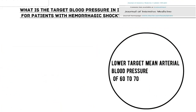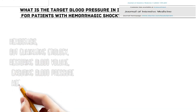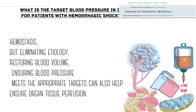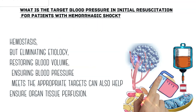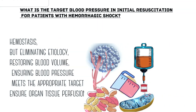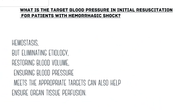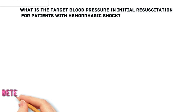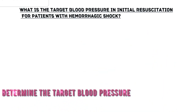The treatment of hemorrhagic shock mainly involves timely hemostasis, but eliminating etiology, restoring blood volume, and ensuring blood pressure meets appropriate targets can also help ensure organ tissue perfusion. Thus, we need to determine the target blood pressure to guide treatment when resuscitating patients with hemorrhagic shock.